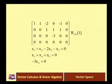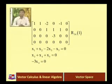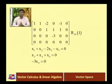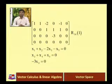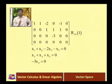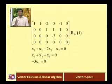In the first column, there is a leading entry. In the second column, there is not a leading entry. In the third column, there is a leading entry. In the fourth column, there is also a leading entry. In the fifth column, there is not a leading entry. So in the second column and fifth column, there is not any leading entry.